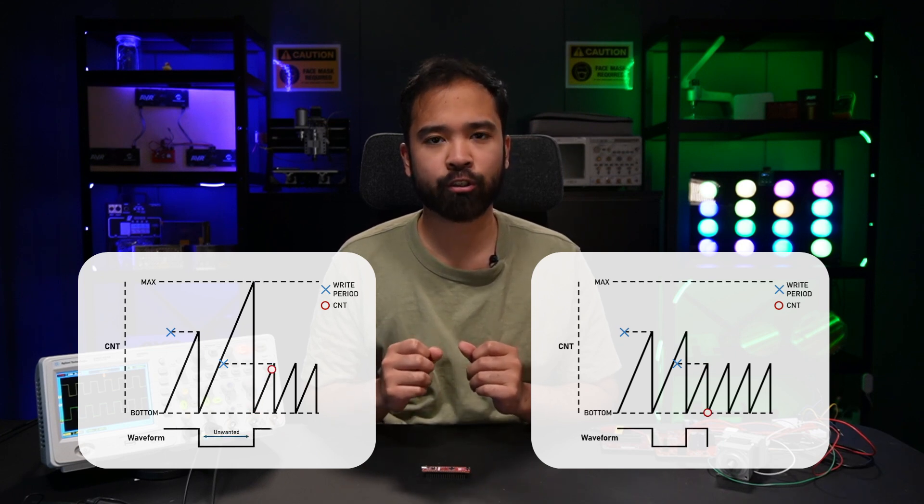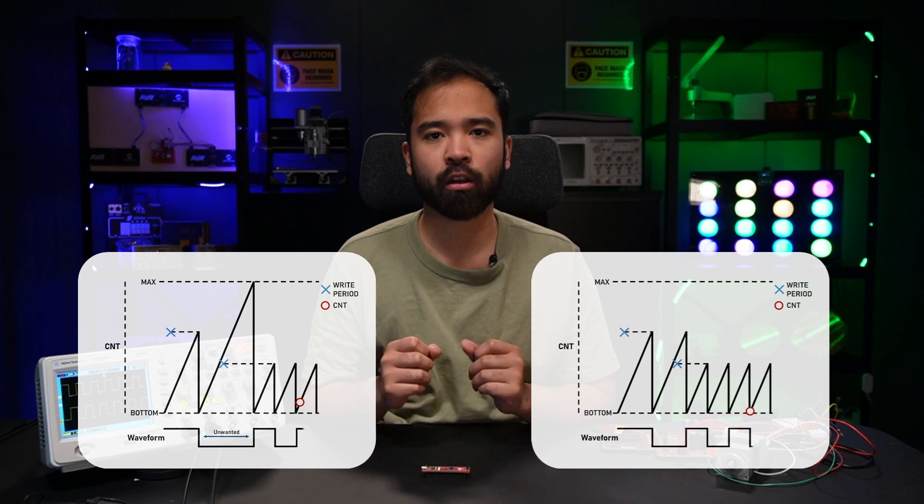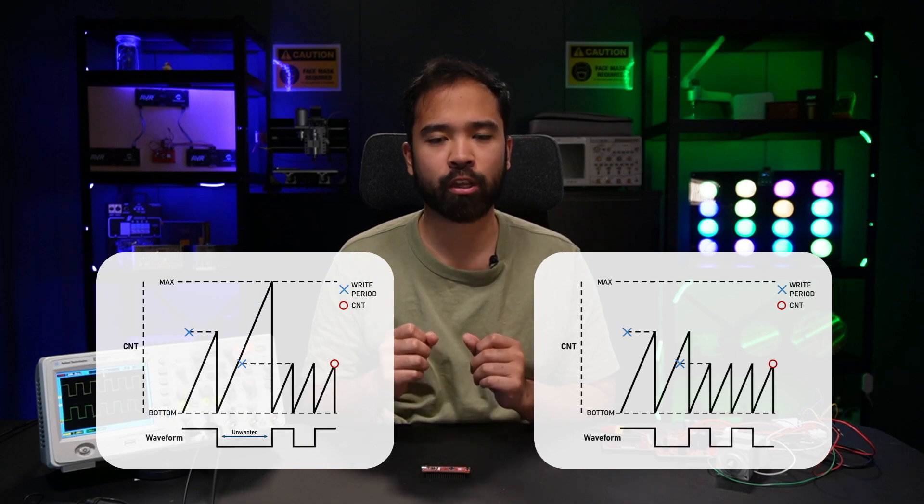The double buffered registers are useful if you want to avoid unwanted wraparound and achieve glitch-free waveforms. So you can update those buffered registers whenever you are in your program.